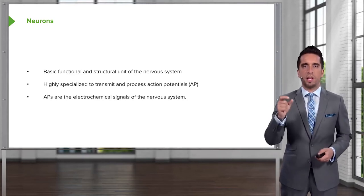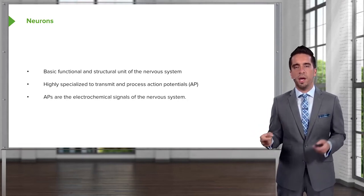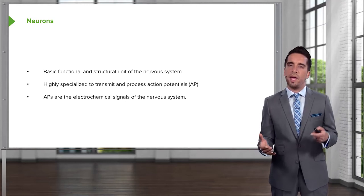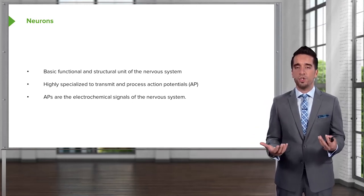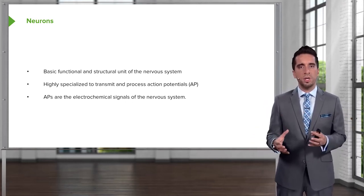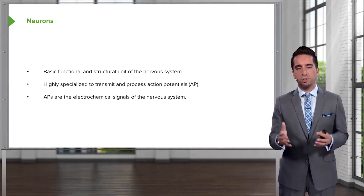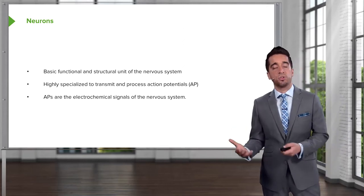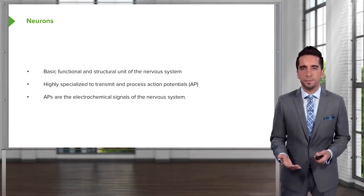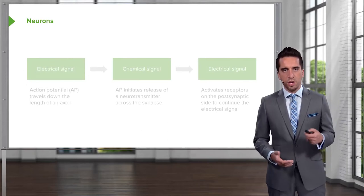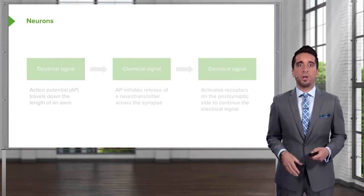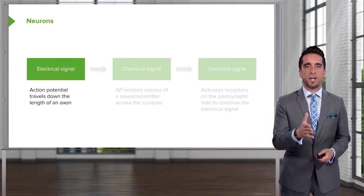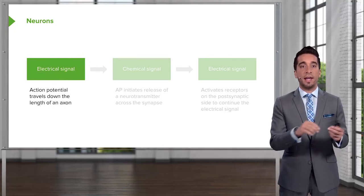So action potentials are the electrochemical signals of the nervous system. And neurons are really neat in that they actually employ two modes of information. So they use electrical through the action potential, and we'll see the movement of ions is what's behind that. And then we have the chemical side, looking at neurotransmitters. So our three basic buckets are we have an electrical signal which is the action potential which travels down the length of an axon.